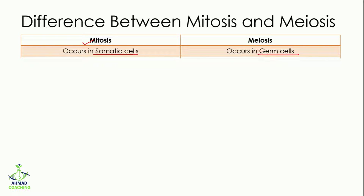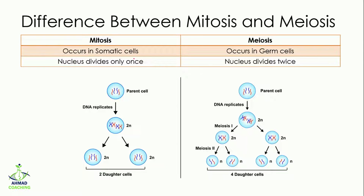Meiosis, on the other hand, occurs in the germ cells. Germ cells are the cells which are going to produce eggs or sperm. In mitosis, nuclear division takes place only once, but in meiosis the nuclear division takes place twice.